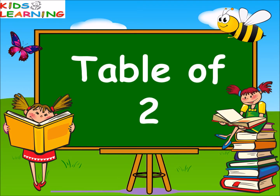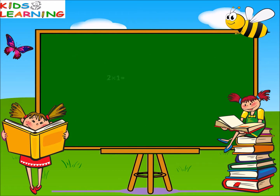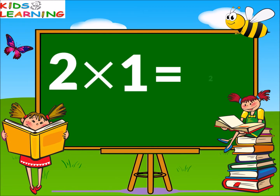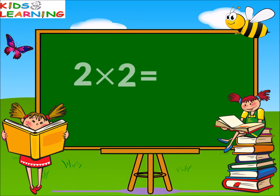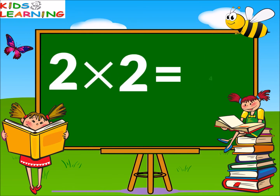Table of Two. Two ones are two. Two twos are four.